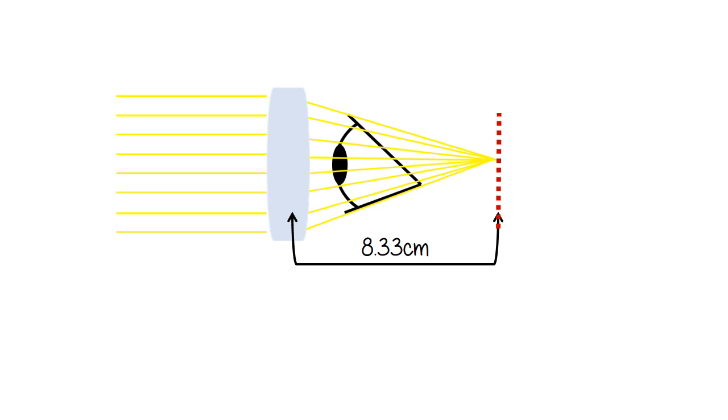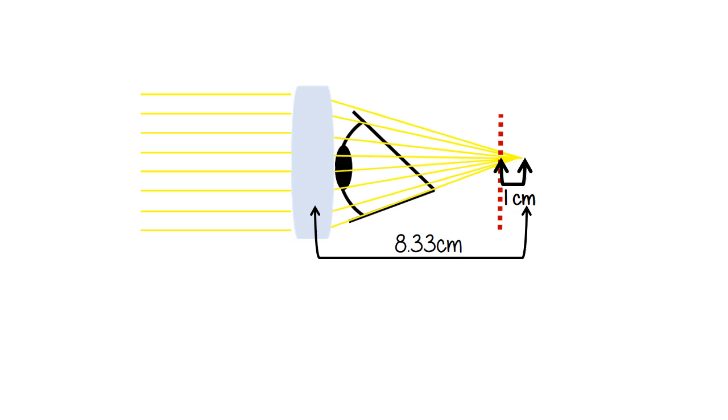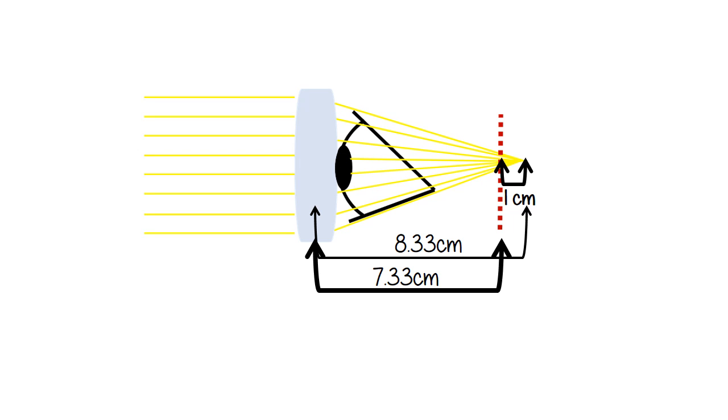Look what happens when we take this lens and move it onto the eye. The patient was seeing really well when that focal length fell on the red dotted line. But now the focal length is too long for the red dotted line, too long by one centimeter. We need to have a shorter focal length by one centimeter. So we need a focal length of 7.33 centimeters for this patient because it has to fall on that red dotted line.